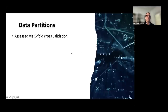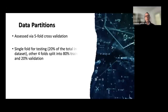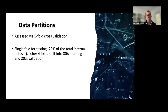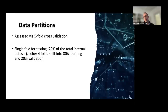We assessed models using five-fold cross-validation, with one fold (~20% of internal data) for testing and the remaining four folds split 80/20 for training and validation. We maintained roughly equal LiRADS category distributions within each fold to avoid class imbalances, and ensured patients with multiple liver observations were not split across folds, preventing information leakage.